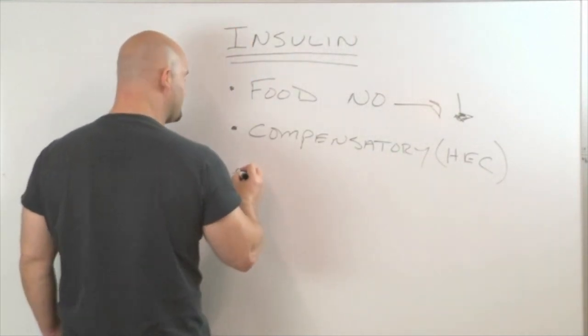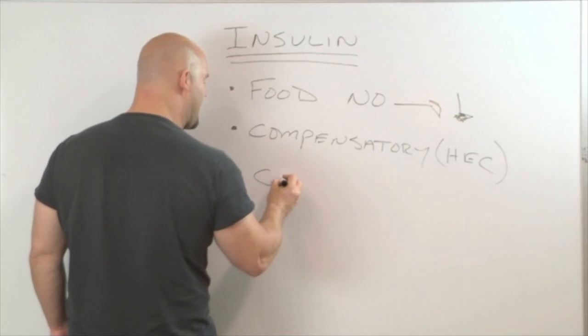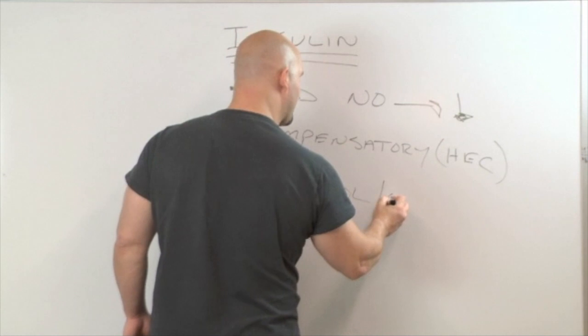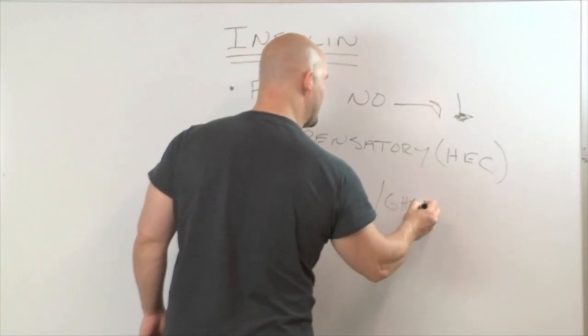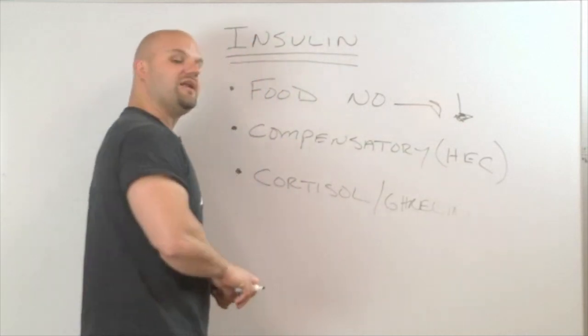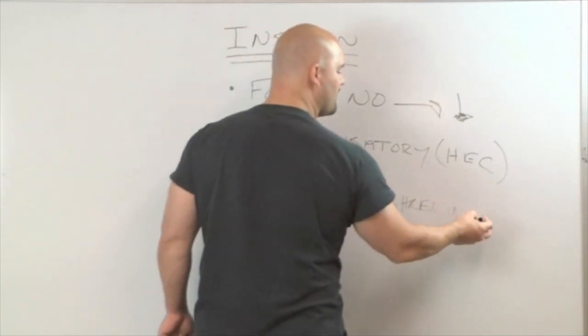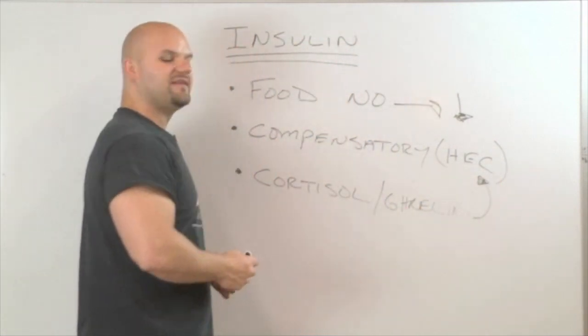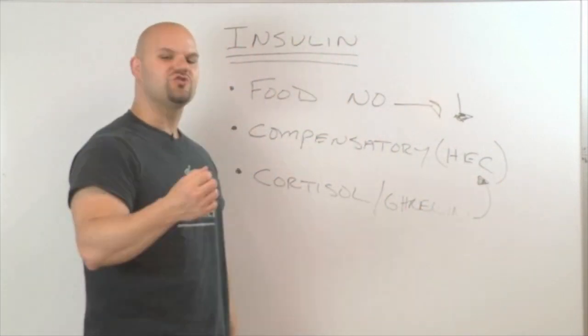It can put into effect these compensatory reactions. The other thing that fasting does is in some people, not all, it will drastically raise cortisol levels and it also will raise a hunger hormone called ghrelin. And these two hormones, both cortisol and ghrelin, are mostly responsible for the increased hunger, energy, and cravings that fasting creates.